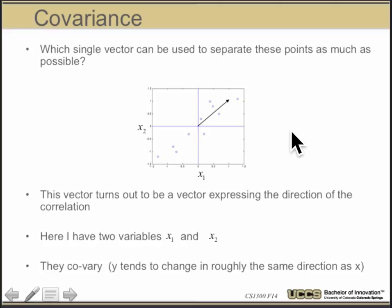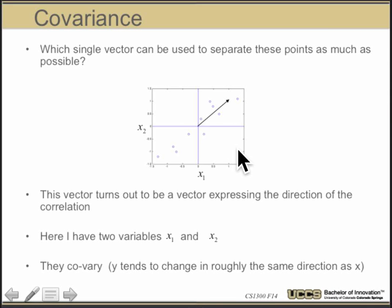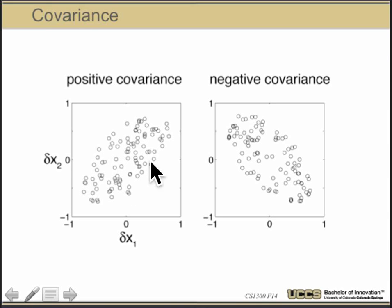To see how we're going to do this, we'll look at a property called covariance. From a vector point of view, I can ask how a vector relates two sets of points. If I think of a vector as expressing the direction of correlation of the data — if I have two variables x1 and x2, as I vary x1, x2 may also vary. In this case, if I move to the right in x1, I need to move up to stay in the range of x2. So in this sense, these two variables co-vary: the vertical component changes roughly in the same direction as the x component.